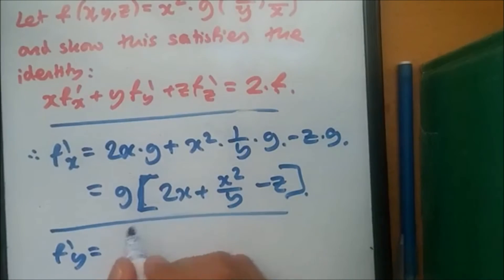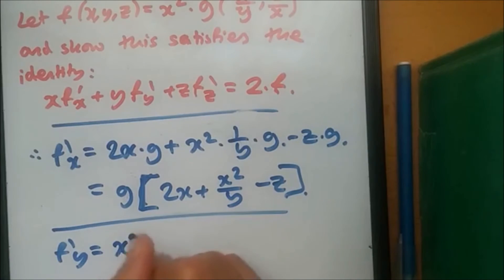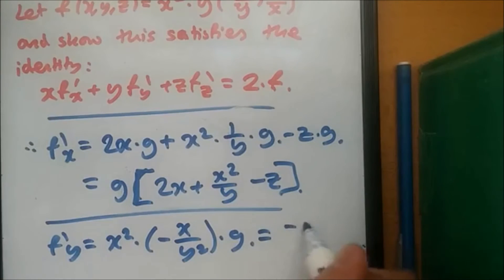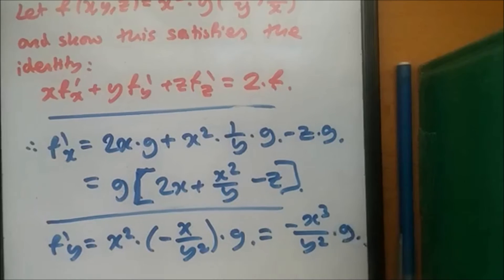And x comes with it. So it's going to be x squared. You copy it. And derivative we said was minus x over y squared times the function g. And this one simplifies to minus x cubed over y squared times g.